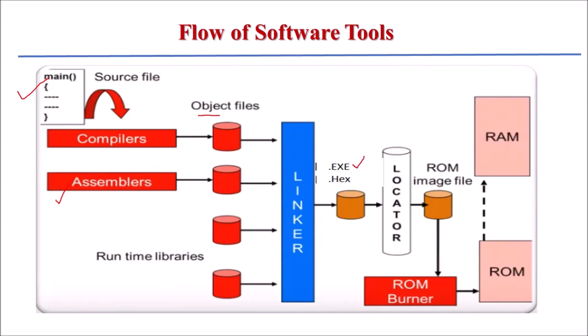The linker generates two types of files: an executable .exe file and a .hex file. The .hex file is downloaded into the memory of the microcontroller, and the simulator uses the .exe executable file to simulate the program. This entire flow — from writing a program in the editor to downloading it into the microcontroller — represents the complete software development process for embedded systems.